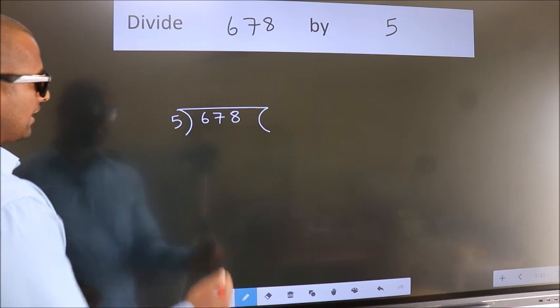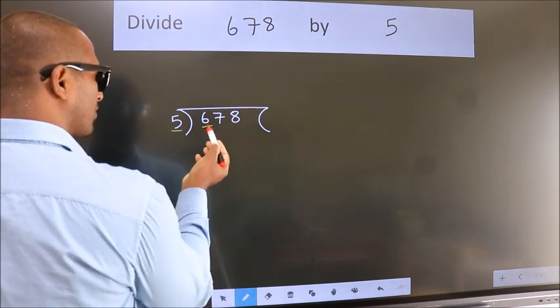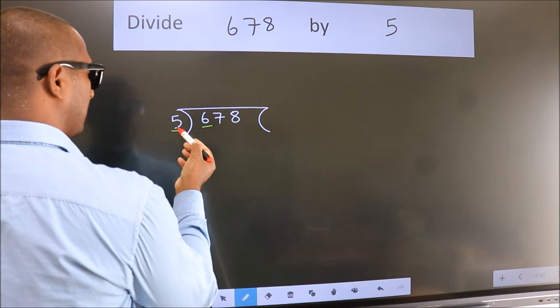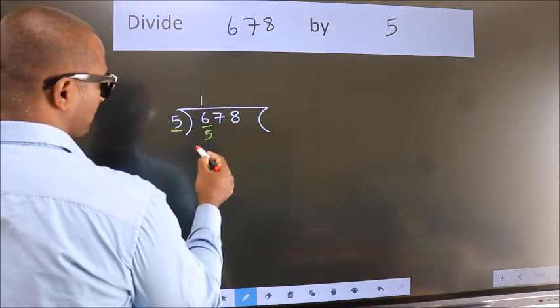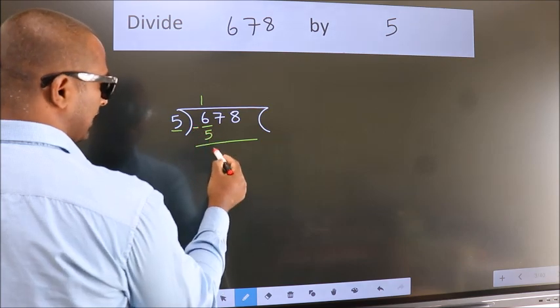Next. Here we have 6, here 5. A number close to 6 in 5 table is 5 once 5. Now, we should subtract. We get 1.